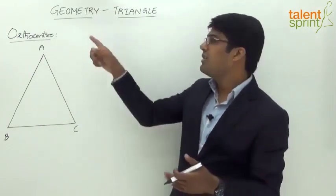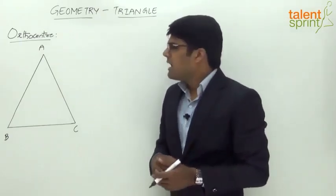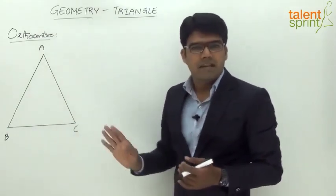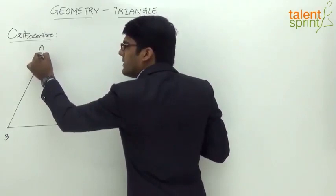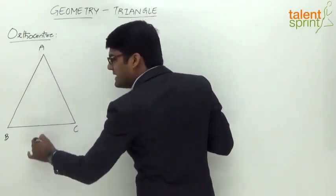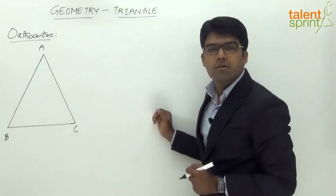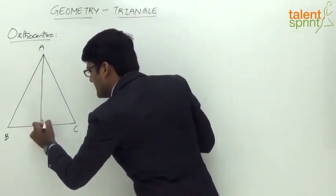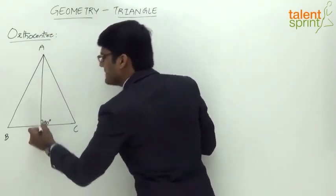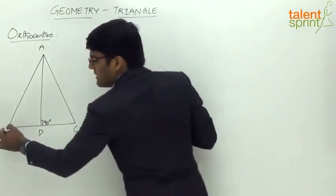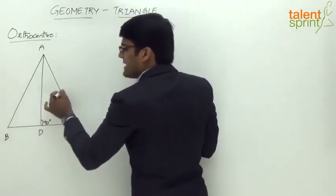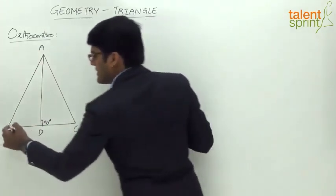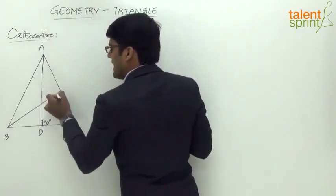All three altitudes meet at a common point called the orthocenter. A perpendicular makes an angle of 90 degrees with the given side. So from vertex A, if we draw a line such that it makes an angle of 90 degrees with side BC, that becomes the altitude of the triangle.